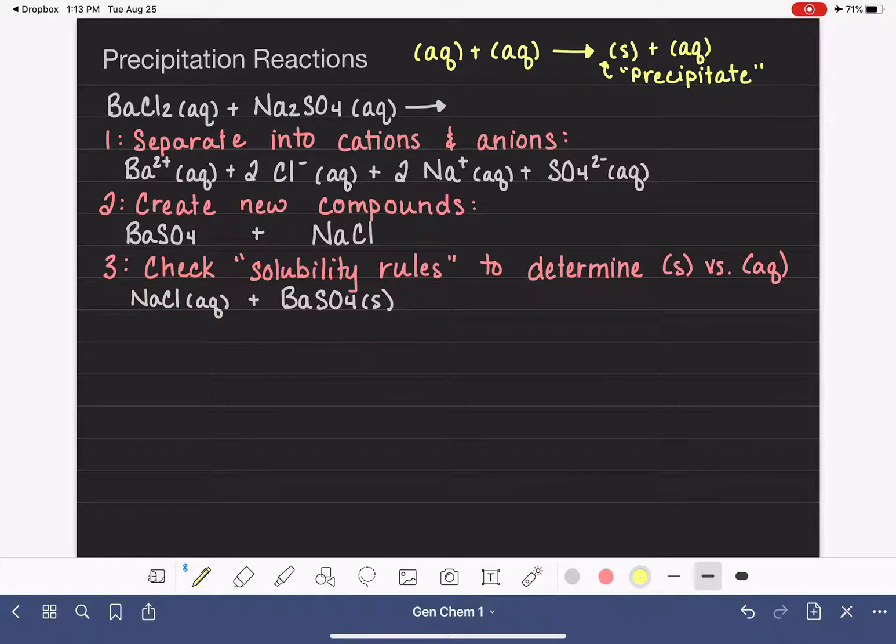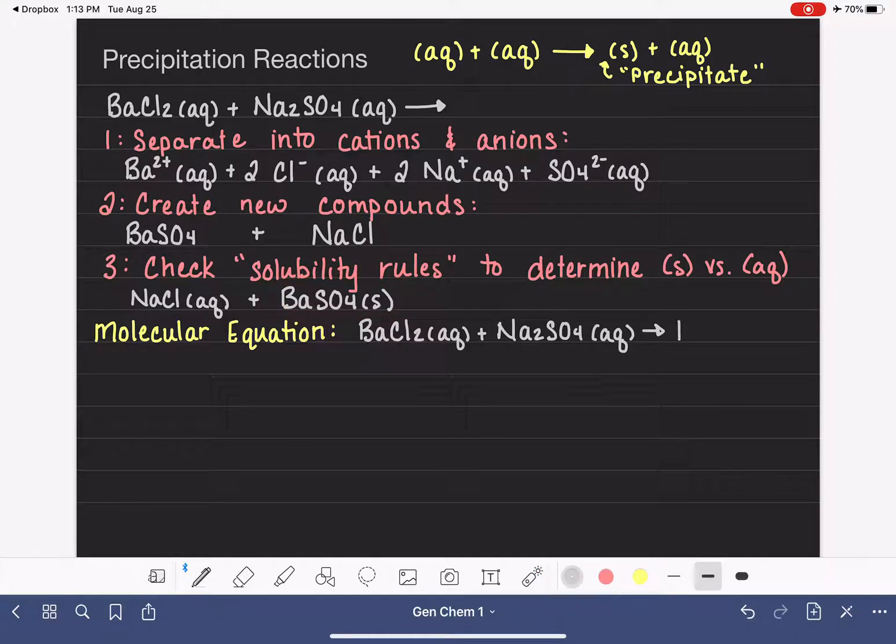Once we get the products of a reaction predicted, there are three different ways that we could communicate the products of a precipitation reaction. One method is called writing a molecular equation. A molecular equation is one that shows all of the reactants and products as neutral ionic compounds. So a molecular equation would look like this. BaCl2, and don't forget that we do want to always include those states, aqueous, plus Na2SO4, aqueous. And the products of the reaction, which we determined were, I'm going to write this one first, BaSO4, solid, and 2 NaCl, aqueous.